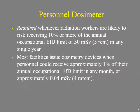Monitoring is required whenever radiation workers could receive at least 10% of the annual occupational dose limit of 50 millisieverts — so that threshold is 5 millisieverts. That same math applies to fetal dose monitoring. Most facilities, to be in full compliance, offer dosimetry to anyone who may receive approximately 1% of their annual occupational exposure.